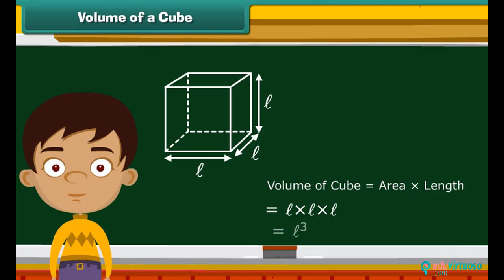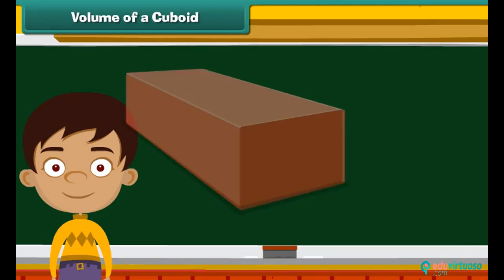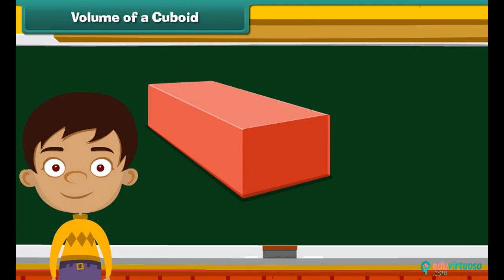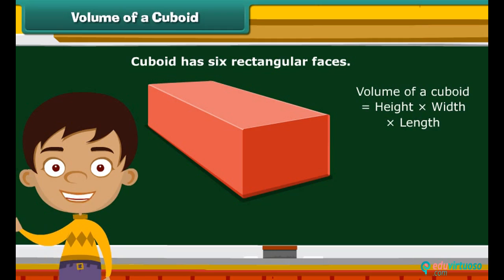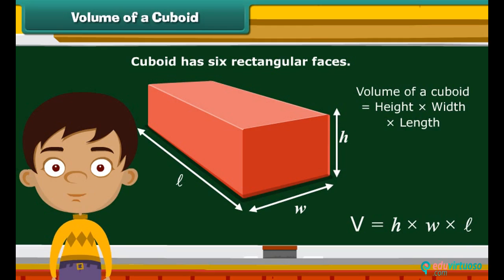Look at this closed box. This is a cuboid which has six rectangular faces. Its volume is calculated as height times width times length, or simply volume equals H times W times L.